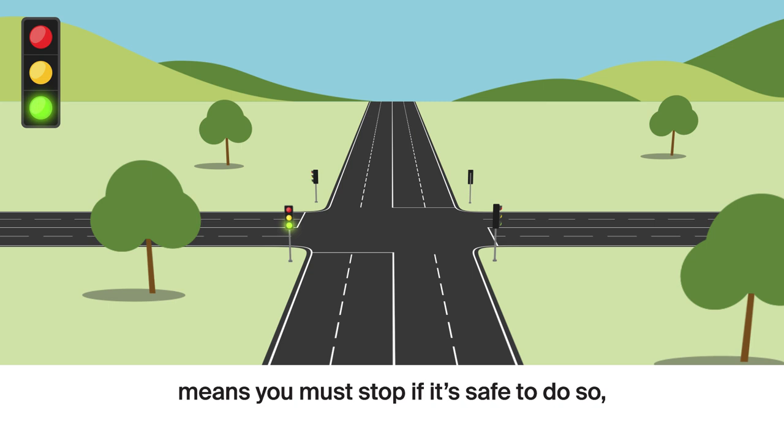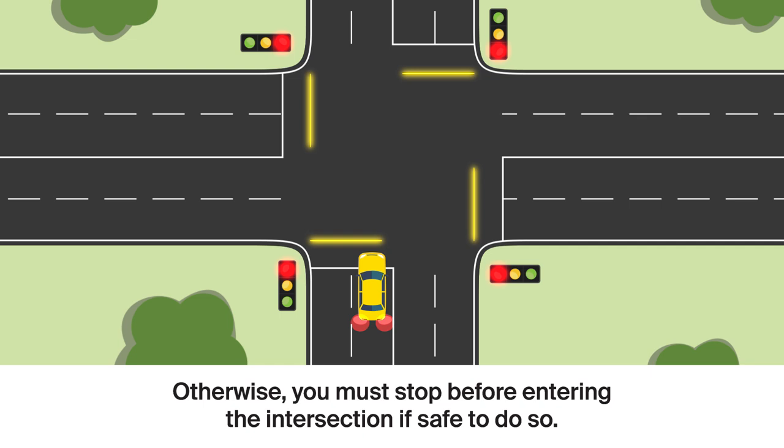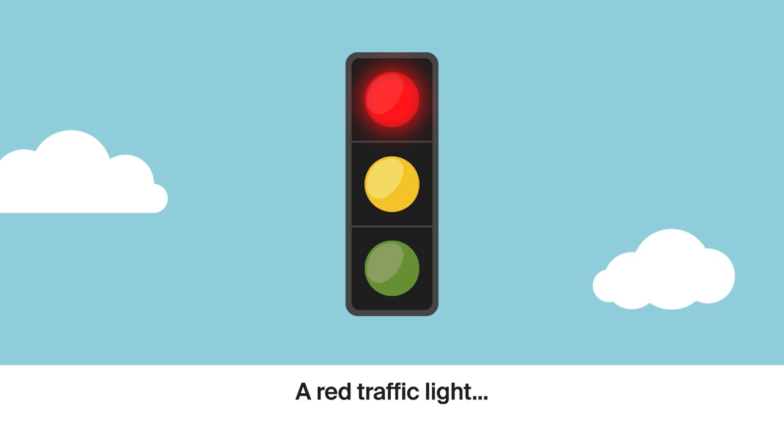A yellow traffic light means you must stop if it's safe to do so before reaching the stop line. Otherwise, you must stop before entering the intersection if safe to do so.